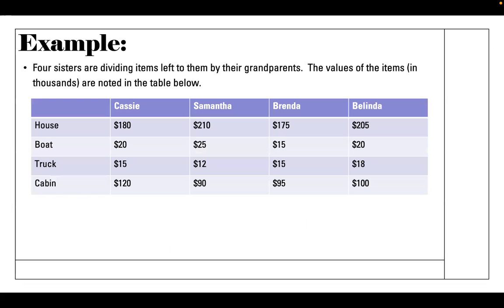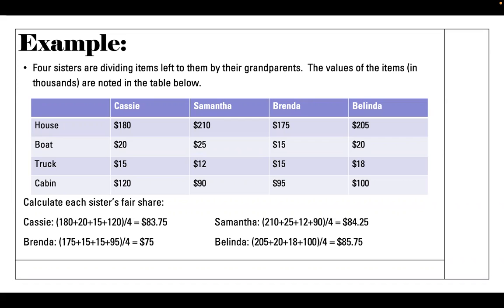Let's look at an example. We have four sisters dividing items left to them by their grandparents: Cassie, Samantha, Brenda, and Belinda. The items are a house, a boat, a truck, and a cabin. Each person places a bid on each item based on what they think it is worth to them, because things are valued differently by different people. The first thing we need to do is calculate each sister's fair share — we add each sister's four bids together and divide by four, because there are four people.